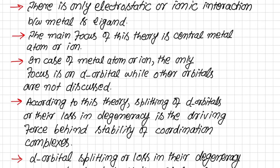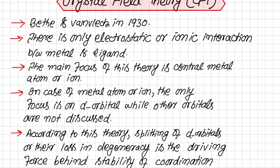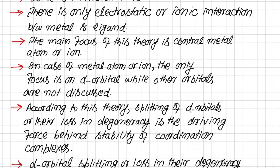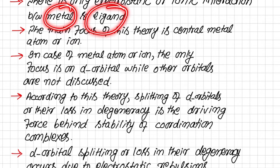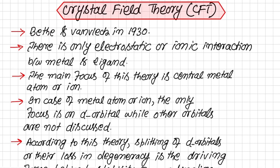The question is what causes the d orbitals to split. The answer is that d orbital splitting occurs due to electrostatic repulsion between the electrons of the metal and the electrons of the ligands. As the metal attracts ligands and they come close, the electrons of both feel repulsions, causing the d orbitals to split into high and low energy levels, and this splitting is the driving force behind the stability of coordination complexes.